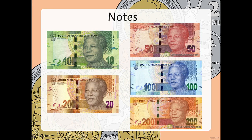Then we have our notes — our money value notes. We've got a 10 rand note which is green in color, a 20 rand note which is brown, a 50 rand note which is pink, a 100 rand note which is blue, and a 200 rand note which is orange.